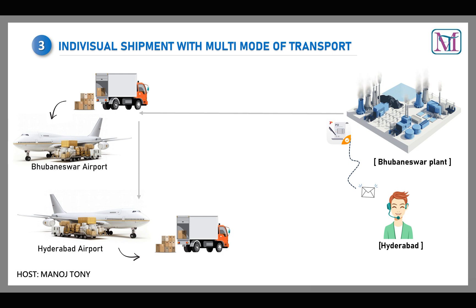Here we have one shipment for the Hyderabad customer, but multi-mode of transport — we use truck and then plane to transport the goods. So this is individual shipment with multi-mode of transport.